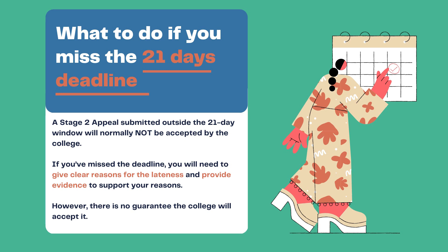This year, undergraduate and postgraduate transcripts will be published on a rolling basis from Monday the 5th of July to Friday the 23rd of July 2021. The assessments team will send a notification to your Goldsmiths email when your transcript is available on My Goldsmiths, so keep your eyes peeled.